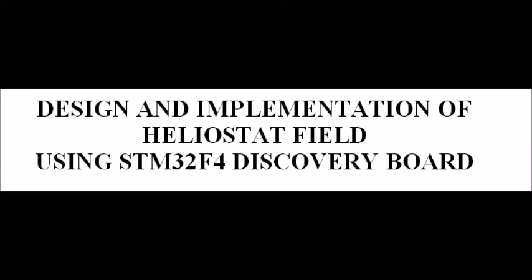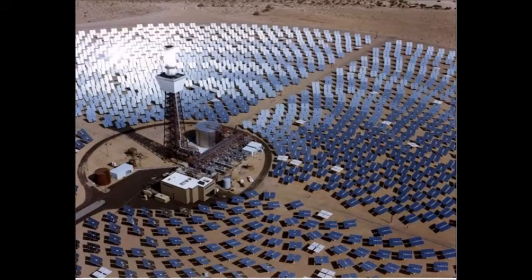Solar panels and steam turbines are used to produce electricity through solar power. For producing electricity through steam turbines, it is required to collect solar power on a single target so that sufficient heat is produced to run steam turbines.